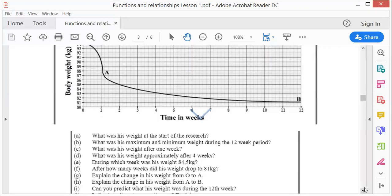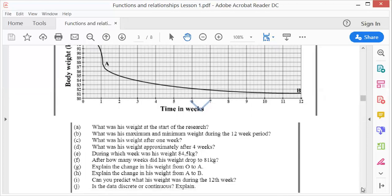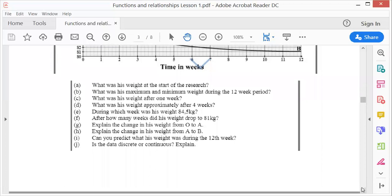And can you predict what his weight was during the 12th week? Of course, during the 12th week, which is after, between the 12th week, of course, like we said, 81 kilogram, isn't it? Is the data discrete or continuous? Well, we know it's a continuous line. So it's definitely continuous. There are no dots.